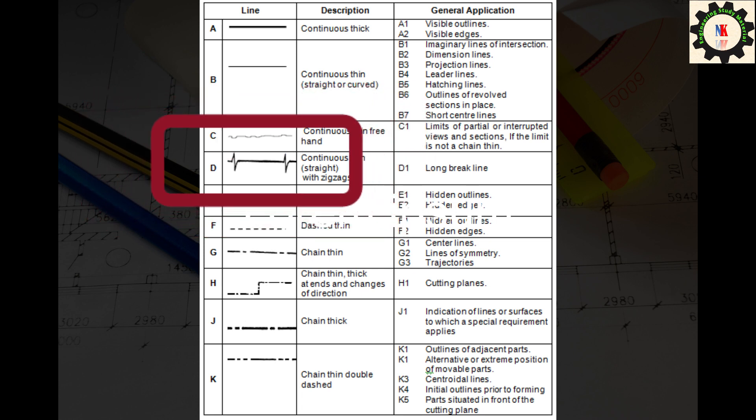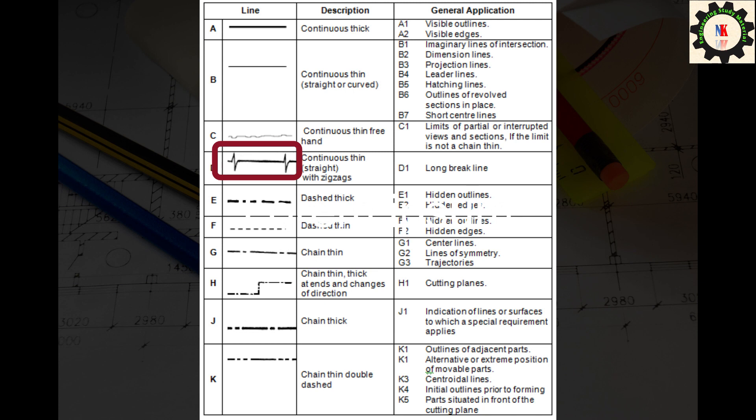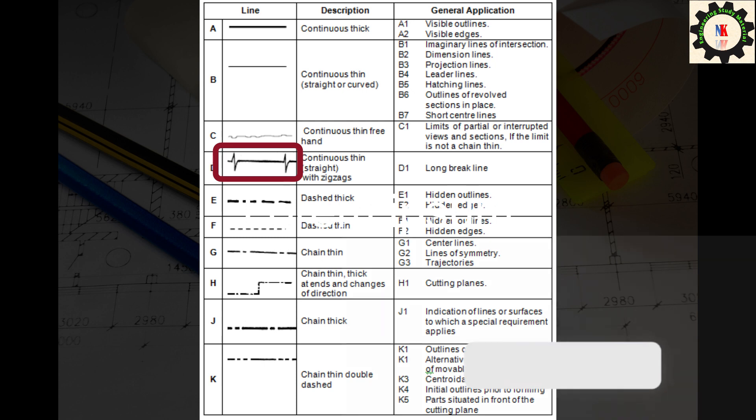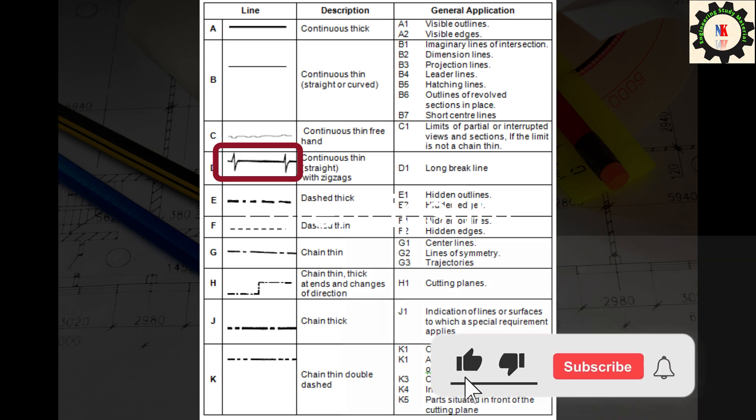This is a straight line in the zigzag direction. Please see the diagram. Below are the uses of continuous thin straight zigzag line. They are used for representing long break lines. They are used for limits of partial views if the limit is not an axis. They are used for limits of interrupted sections if the limit is not an axis.